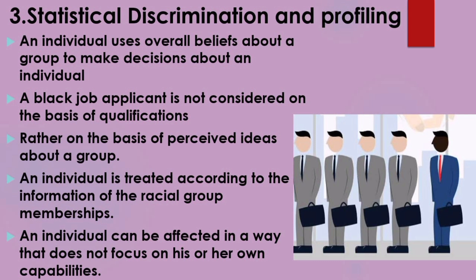Members of these racial groups may adapt behaviors to signal their differences from group averages. For example, non-white business people who want to signal their trustworthiness may dress impeccably in expensive business suits. Similarly, non-white parents who want their children to get into a first-rate college may signal their middle-class background by sending their children to an expensive private school. The practice of statistical discrimination can impose costs on members of the targeted group even when those individuals are not themselves victims of explicitly discriminatory treatment, affecting individuals in a way that does not reflect their own capabilities.